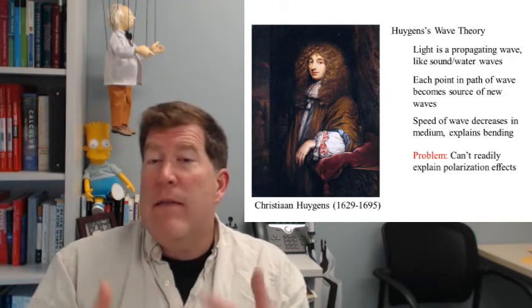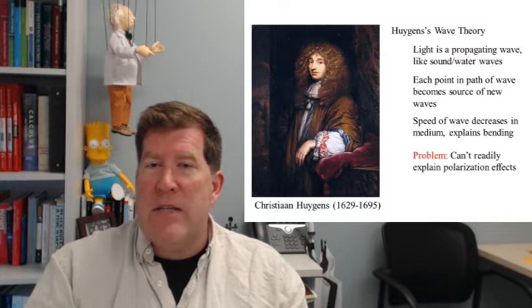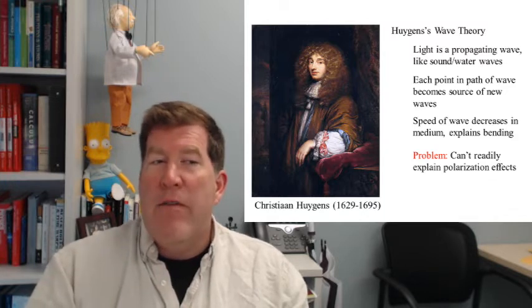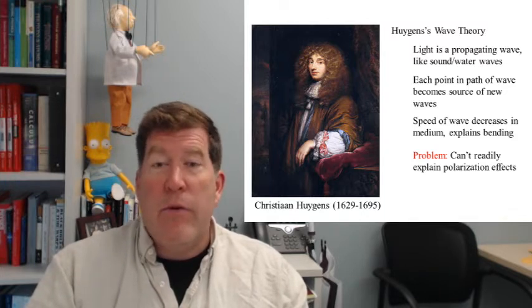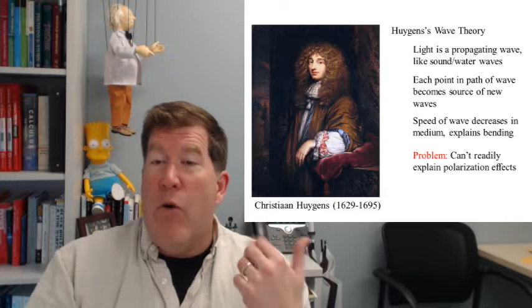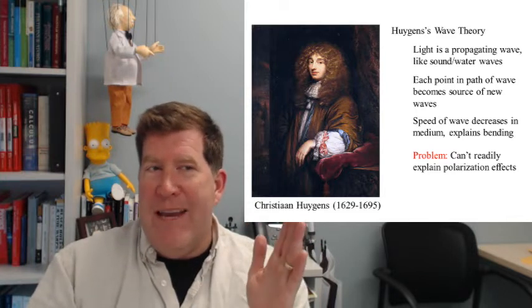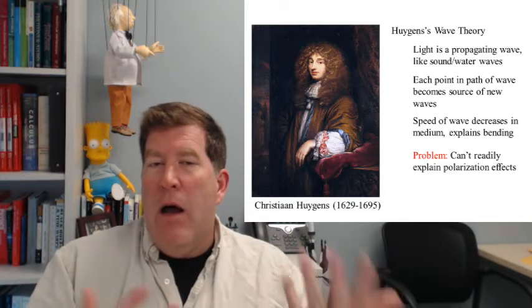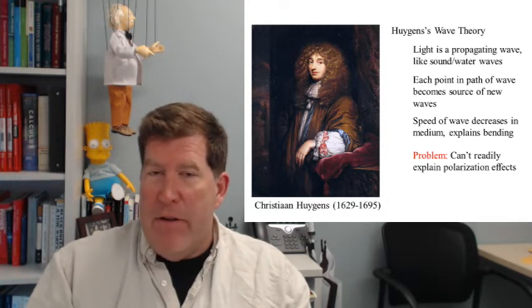So Huygens had this wave theory that he put forward, wasn't completely successful, but was promoted by a number of other people, including the Swiss mathematician, Leonard Euler. That's Euler with an E, E-U-L-E-R, who is a very famous mathematician who's all over everything.